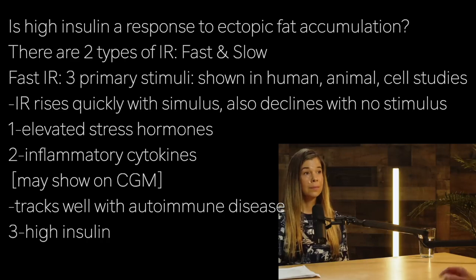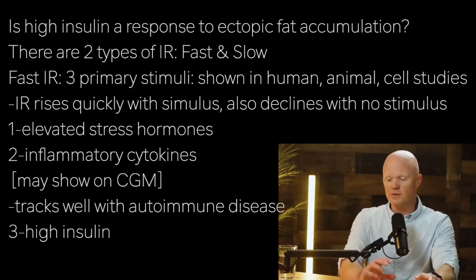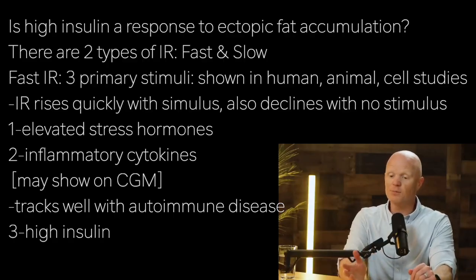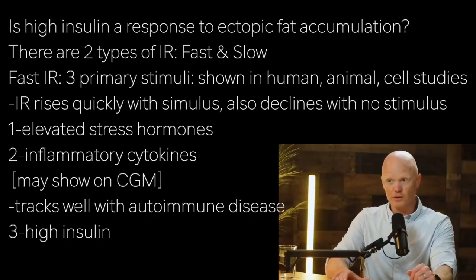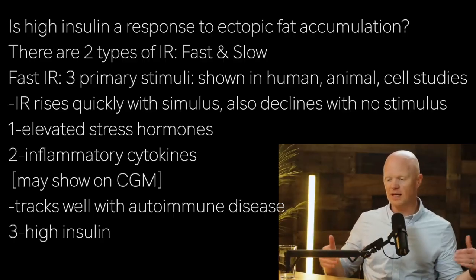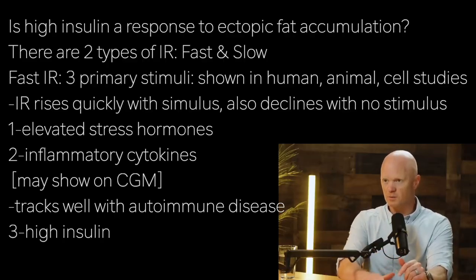The first is stress. Elevated stress hormones — whether it's cortisol or epinephrine — will cause acute insulin resistance in humans. As that stimulus goes away, the problem resolves. Next is inflammation. If you increase the levels of inflammatory cytokines in cells, rodents, or humans, they will be insulin resistant very quickly. People wearing CGMs may notice this — the CGM may reveal they're starting to get a cold or flu because glucose levels become much harder to control, even though their habits haven't changed. That's often a sign of inflammation. Even with autoimmune diseases, where the disease ebbs and flows, so too will the insulin resistance — it tracks very well with how active the disease is.